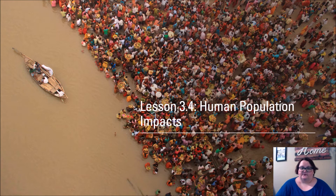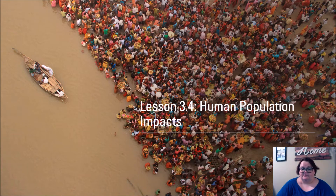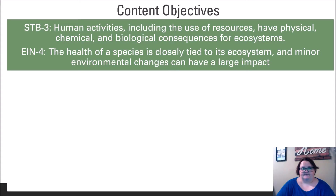Hi everybody and welcome to lesson 3.4: Human Population Impacts. The content in this video is aligned to the third edition of Environmental Science for AP, and while it does not apply to any particular AP CED unit, it does cover material useful for free response questions. In our last lesson we discovered the variety of factors that interact to develop human populations in the size and locations we know today. In this lesson we turn our focus to the impacts that these populations have on the world around them.